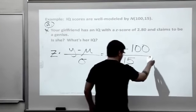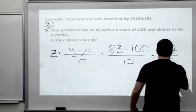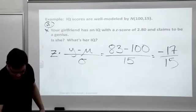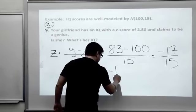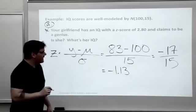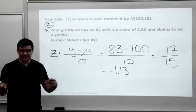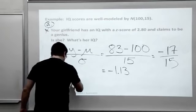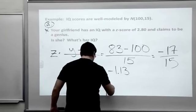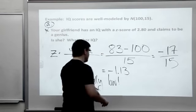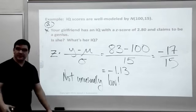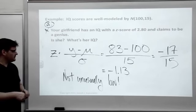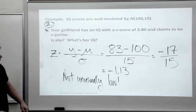That will translate it to a Z-score. This is negative 17 over 15. It's negative because this IQ score is below average. It's okay to get a negative Z-score. Don't make it positive thinking you made a mistake. If you divide that out, you get negative 1.13. So that person's IQ is 1.13 standard deviations below the mean. Is that unusual? No, this is not unusually low.